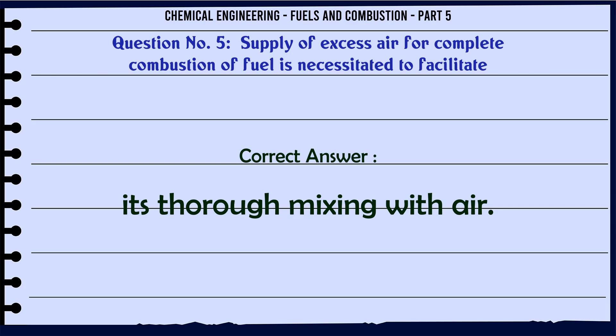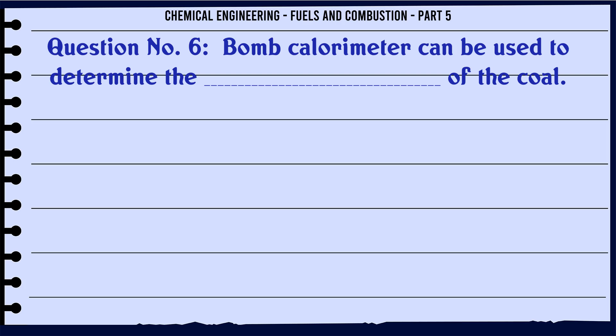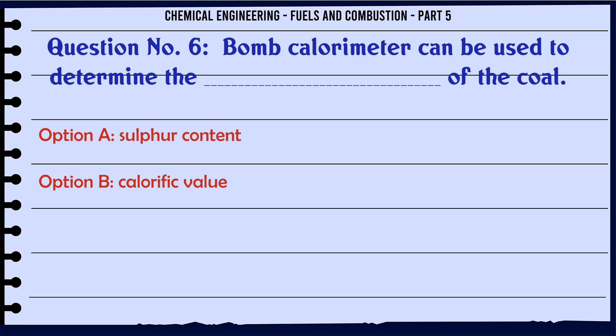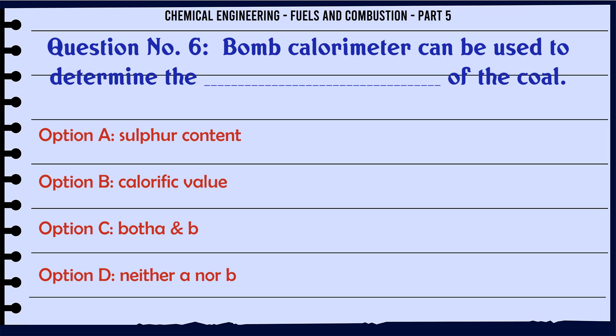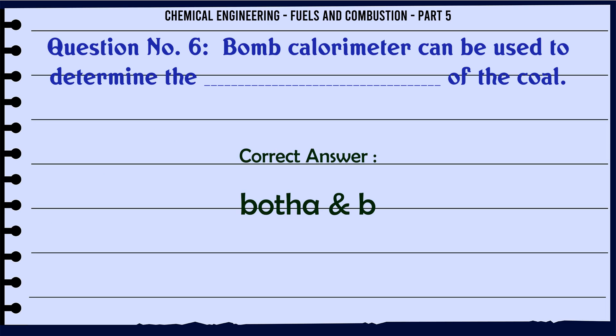A bomb calorimeter can be used to determine the following of coal: A. Sulphur content. B. Calorific value. C. Both A and B. D. Neither A nor B. The correct answer is both A and B.